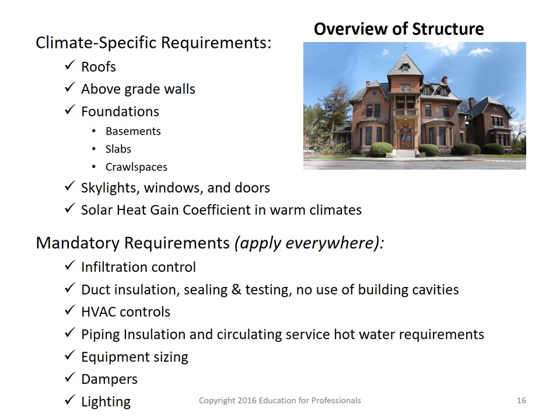Climate-specific requirements apply based on climate zone — Massachusetts is in climate zone 5. There are mandatory envelope requirements that must be met regardless of location, including moisture and infiltration control and duct insulation. Other envelope requirements such as insulation values and window efficiency are based on the climate of the project location. Other mandatory items include mechanical ventilation for systems serving multiple dwelling units, snow melt and ice system controls, and pools and spas.